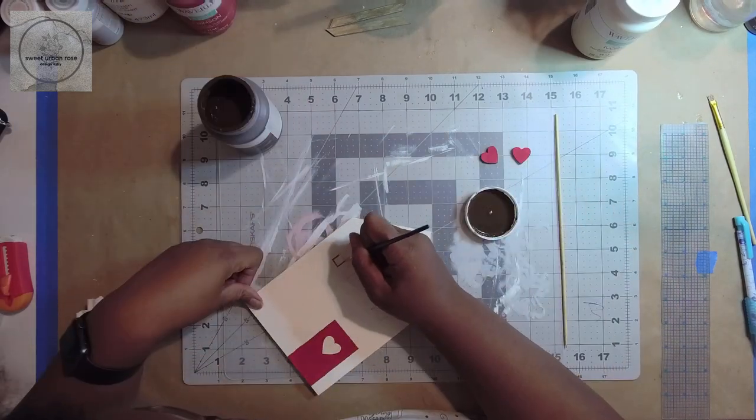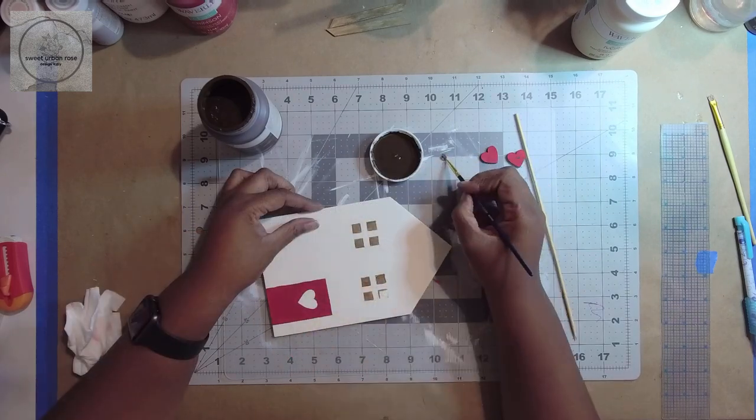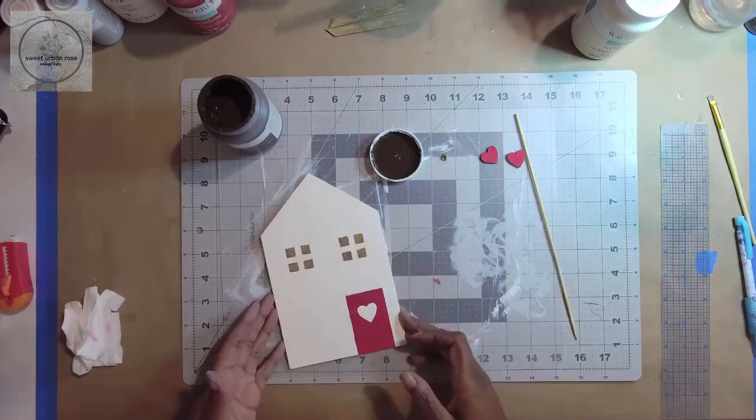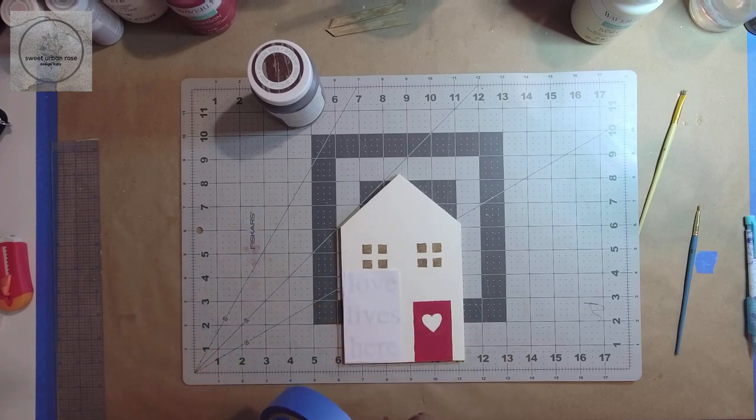Then I came in with Waverly wax in antique and a fine paint brush to fill in the windows. I came back to the love lives here printout and after choosing my placement, I taped it into place.